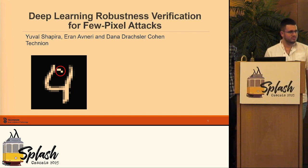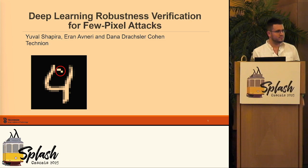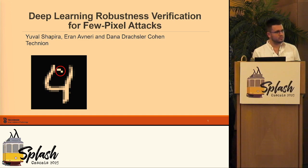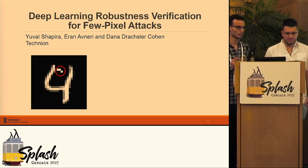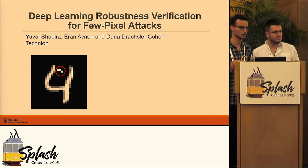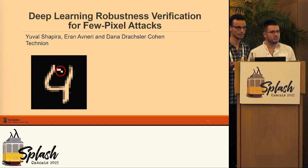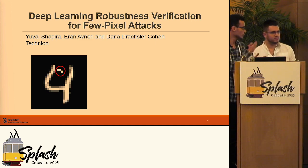A second audience member asked whether the authors considered a geometric approach: rather than combinatorially searching over subsets, one could ask how much the network's output distance changes when removing a pixel from a set, potentially making the procedure more efficient geometrically. The presenters agreed this was interesting, acknowledging that their current approach treats all pixels equally. They suggested that a covering design could be chosen so that pixels important to the image — not background pixels — appear less frequently, which could improve results.